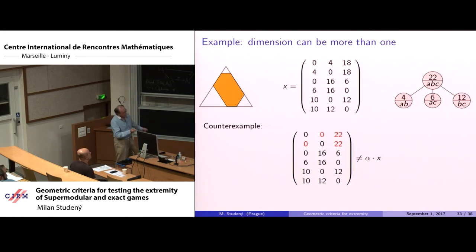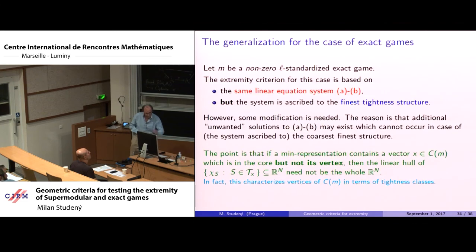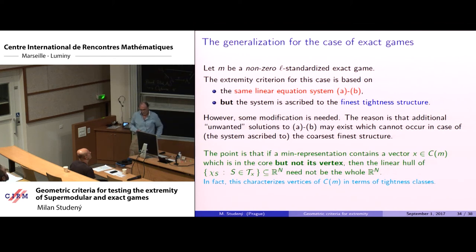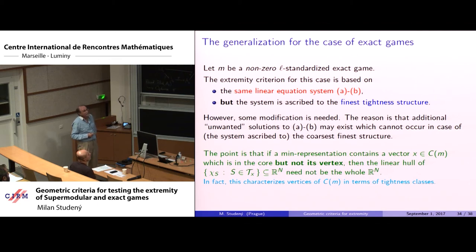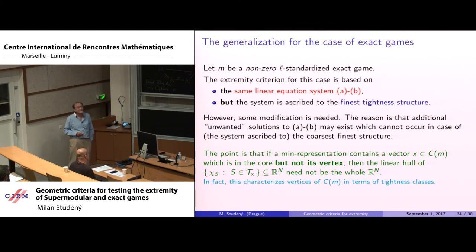To illustrate the system with three players: the core is a triangle. Reading off the tightness classes from the array and applying the two conditions, one finds that all non-zero entries must be equal, giving dimension one — confirming extremity. If the dimension is more than one, the game is not extreme.